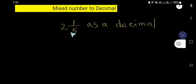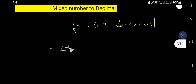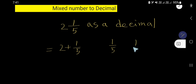I will show you two ways to convert this mixed number to decimal. For the first way, you rewrite it as the whole number part plus the fractional part. Your task is to convert the fraction to decimal by dividing the numerator by the denominator.